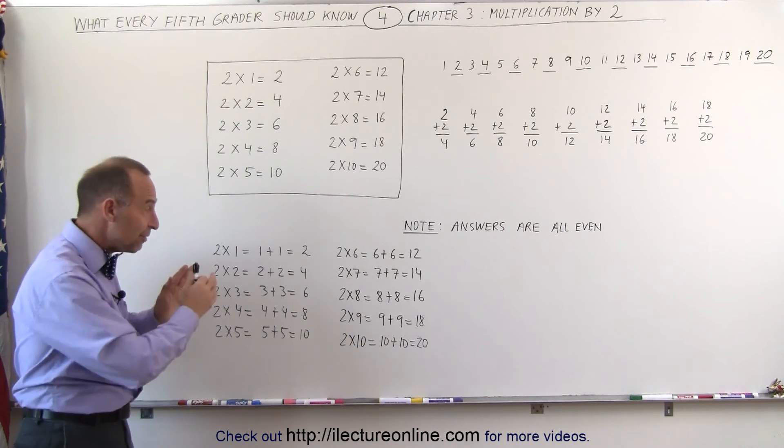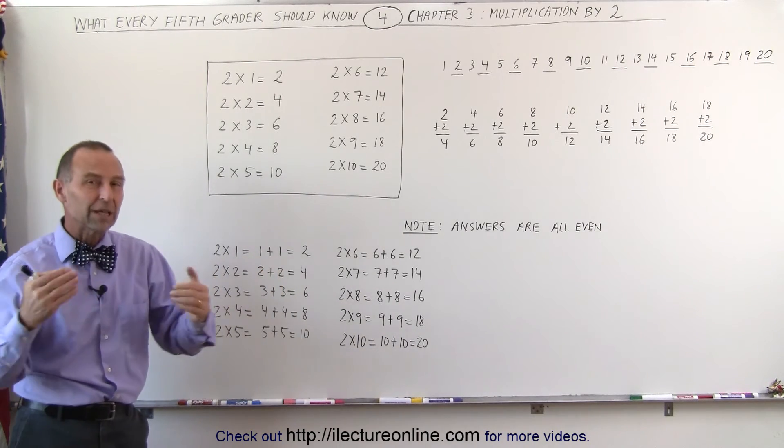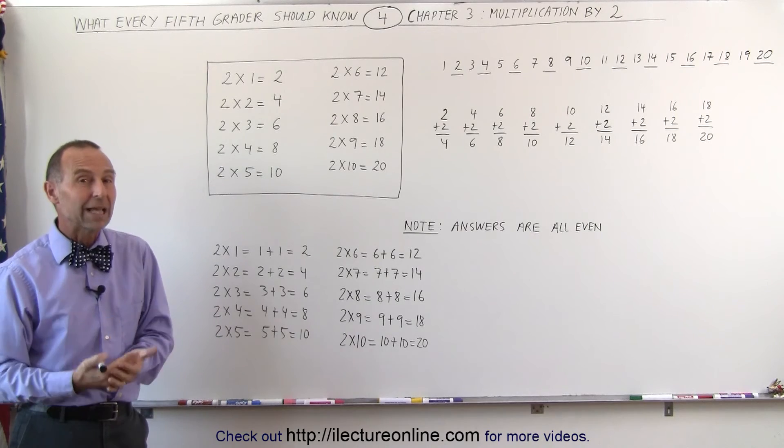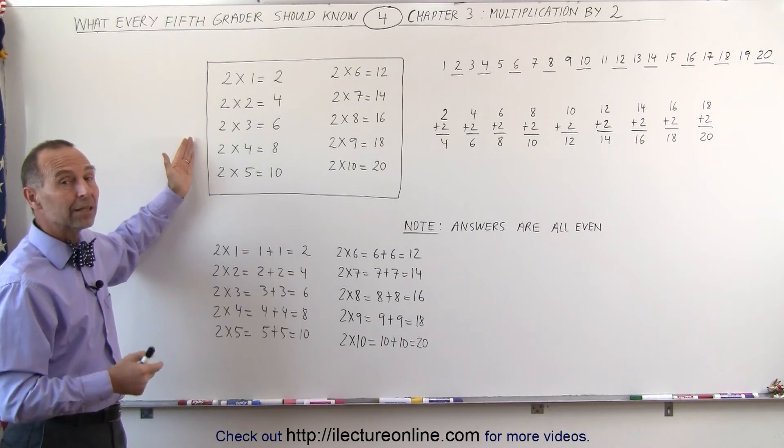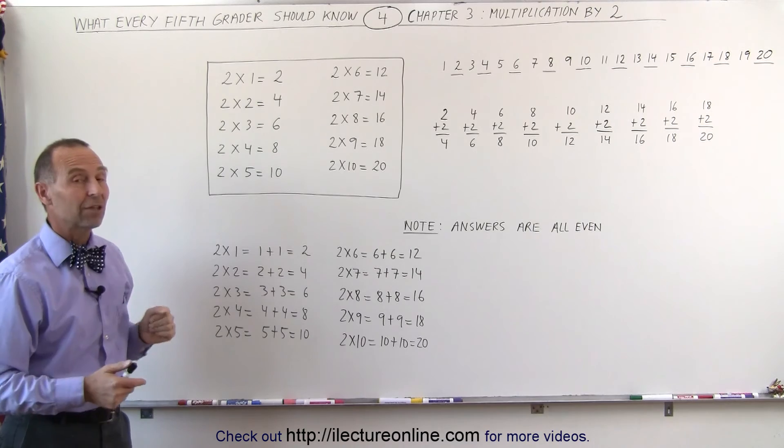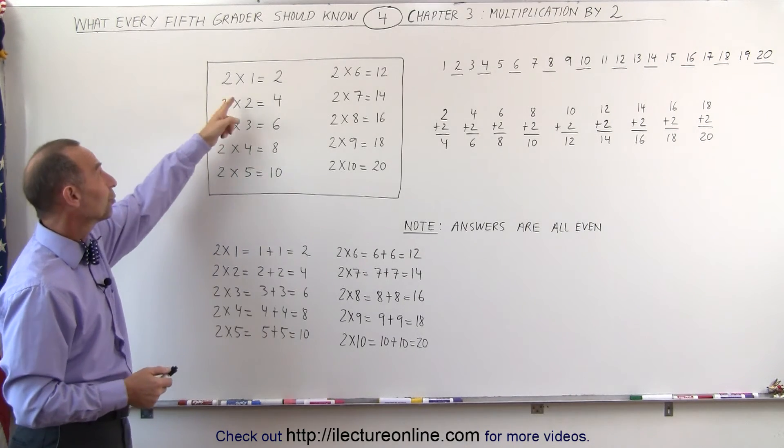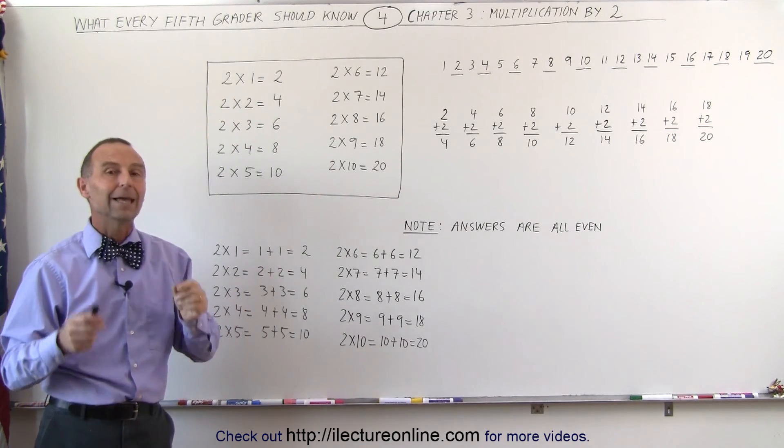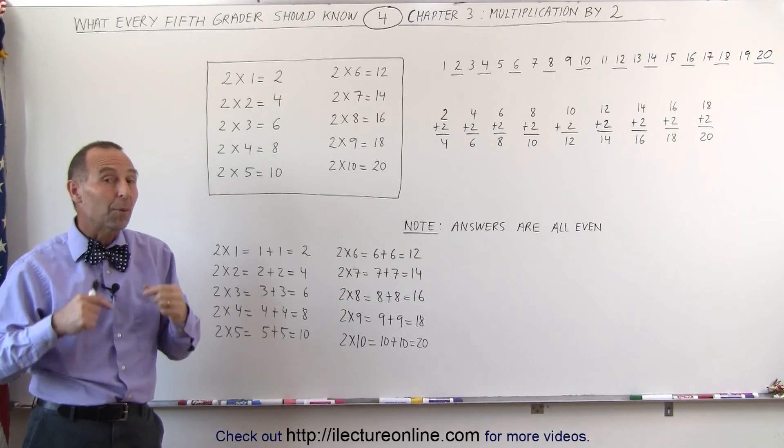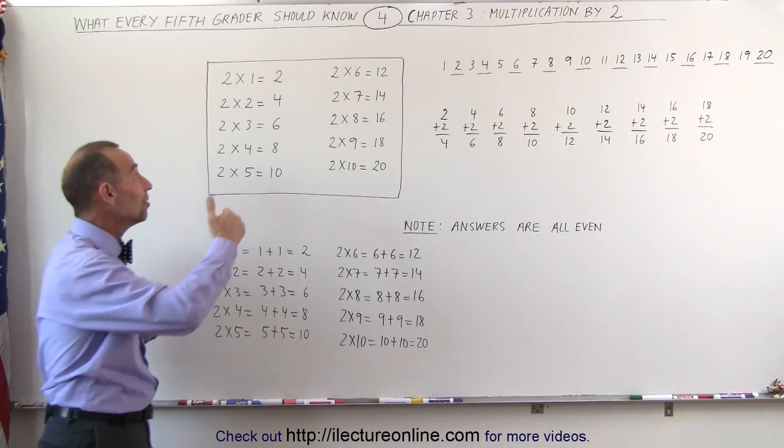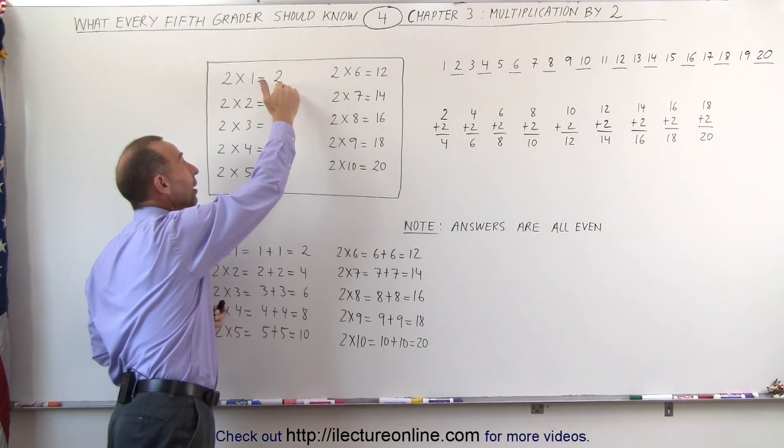No matter what, even if you see the patterns, which is really good because it helps you understand what multiplication is, it's still very important that you memorize this particular table. That you go from 2 times 1 all the way to 2 times 10 and memorize the answer in each case. But what helps is to realize that it's simply the even numbers, you count by 2.